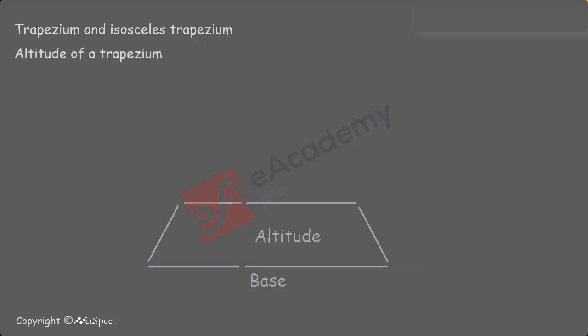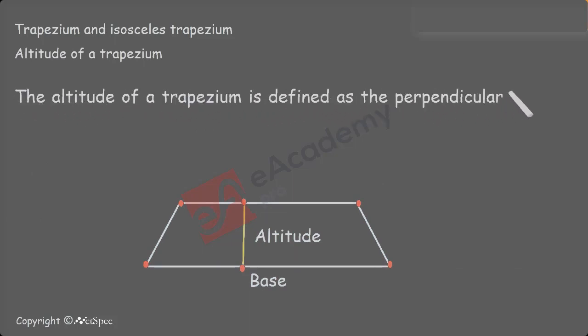Altitude of a trapezium. The altitude of a trapezium is defined as the perpendicular distance from the vertex to the opposite base.